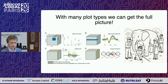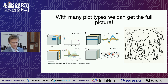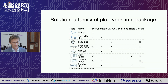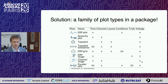Using these many plot types, we can get the full picture of the data. Like in this metaphor, the elephant is EEG data and the blind people represent different plot types, giving the full picture together. It would be nice to have all of them in one package.